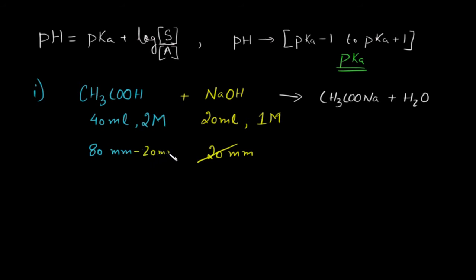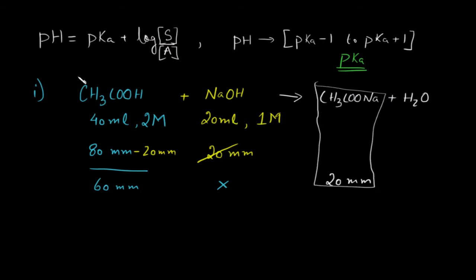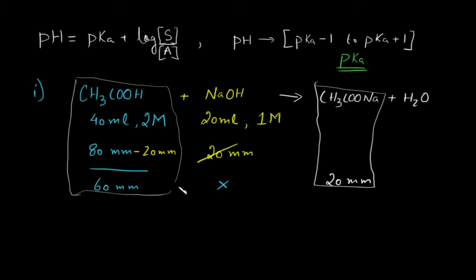After the reaction, we will have 60 millimoles of acetic acid remaining, NaOH will be completely gone, and 20 millimoles of sodium acetate will be formed. So effectively our solution contains sodium acetate and acetic acid — a weak acid and its salt. So we have a buffer solution. The question will be indirectly asked: when 40 ml of 2 molar acetic acid reacts with 20 ml of 1 molar NaOH, what is the pH of the resultant solution?